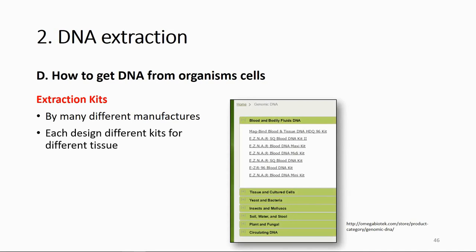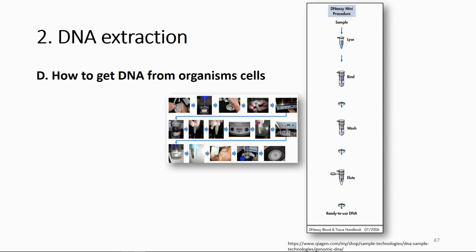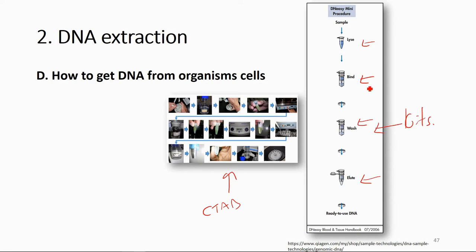These kits are available for different kinds of tissue. Some manufacturers develop special kits for specific tissue types — for example, kits for blood, yeast and bacteria, molar insect samples, and even environmental samples. The CTAB method is a conventional method, while the commercial kit is a more streamlined alternative, requiring only about seven steps compared to the conventional method.